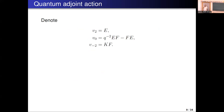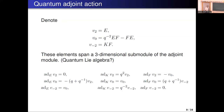Now consider the following nice small submodule: V2 is E, V minus 2 is KF. Classically you would have E, F, and H inside the enveloping algebra as an adjoint submodule isomorphic to SL2. Here it's a little different but somewhat similar: you have E, you have KF — you have to correct F a little bit — and instead of H, this V0 is Q minus 2 times (EF minus FE). When Q equals 1, that would be EF minus FE, which is H. So this is a quantum version of H. These elements span a three-dimensional submodule of the adjoint module — this should be called a quantum Lie algebra.